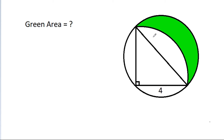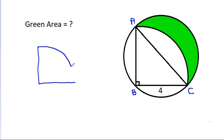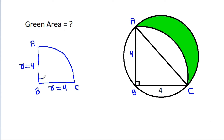In the given figure, we have to find this green area. Suppose this point is A, this point is B, and this point is C. Then in quarter circle ABC, BC will be the radius, that is 4, and AB will also be the radius, so it should be equal to 4. AB is 4 and this angle is 90 degrees.